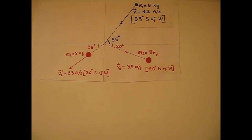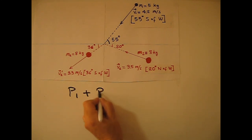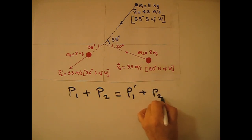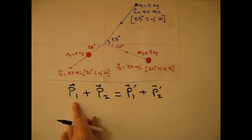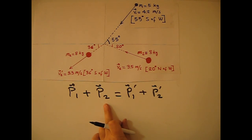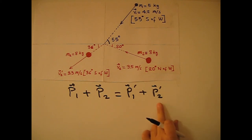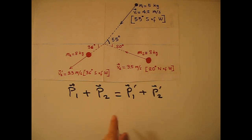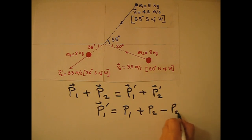In this problem, net force is assumed to be zero and friction is neglected, so total momentum just before the collision equals total momentum just after the collision. So p1 plus p2 equals p1 prime plus p2 prime. If we rearrange the formula, we get p1 prime equals p1 plus p2 minus p2 prime.